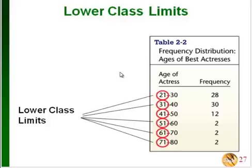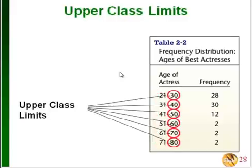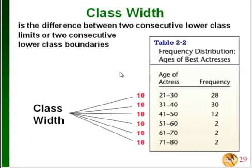These first numbers in each category are called the lower class limits. The second number for each category is called the upper class limit. If we look at our upper and lower class limits, we can use that to find our class width.